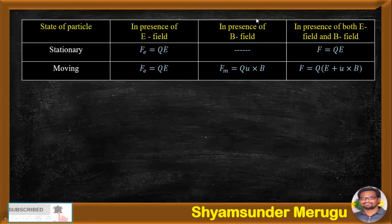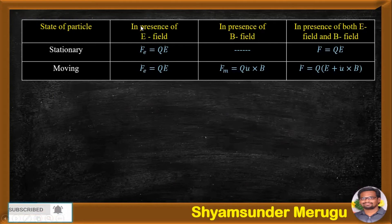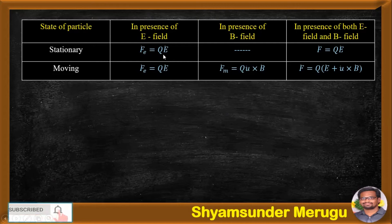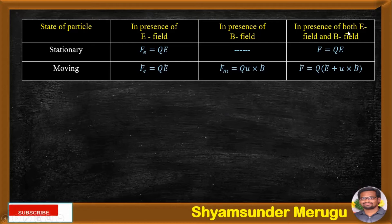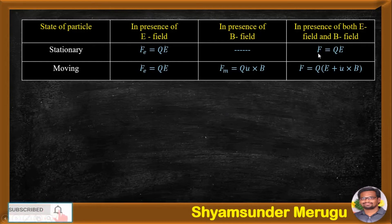Let us summarize. Looking at the state of the particle: when the particle or the charge is at a stationary position in the presence of the electric field, the force exerted on Q is Fe bar equals QE bar. And when the charge is in a stationary position in the presence of the magnetic field, the force exerted on the charge is nothing. And in the presence of both the electric field and magnetic field, the force exerted on the charge is due to only the electric field, so the force can be written as F bar equals QE bar.